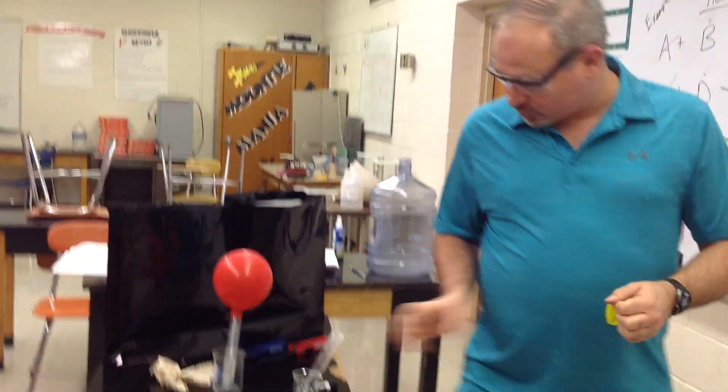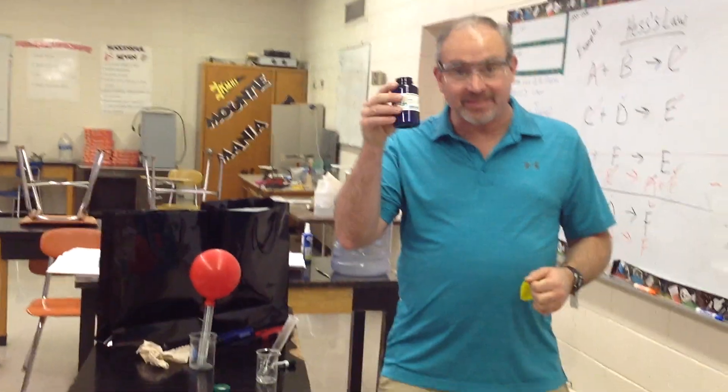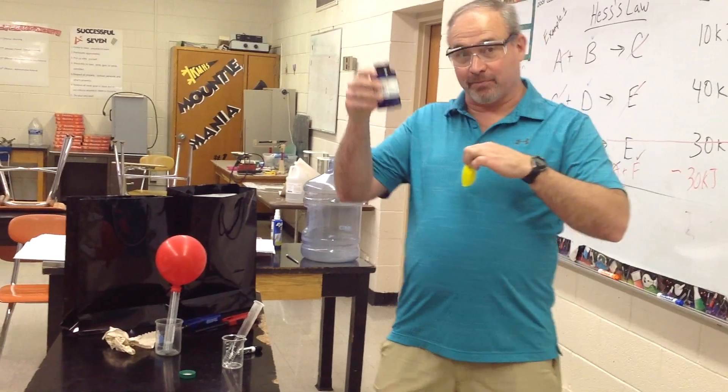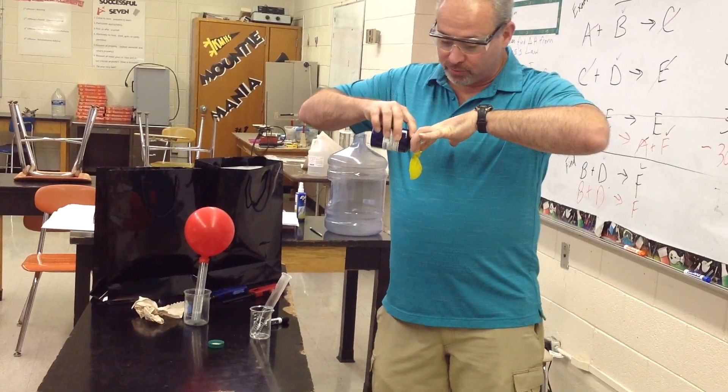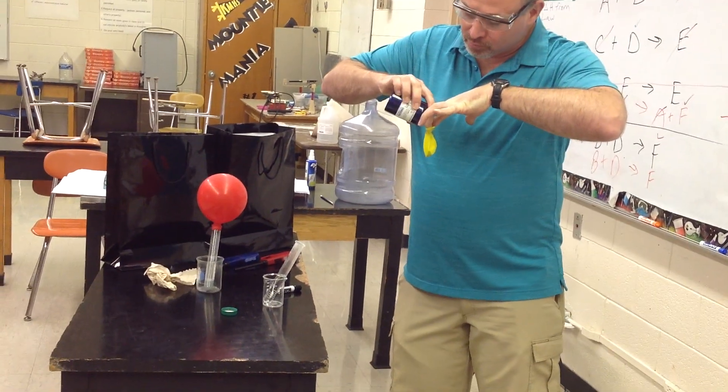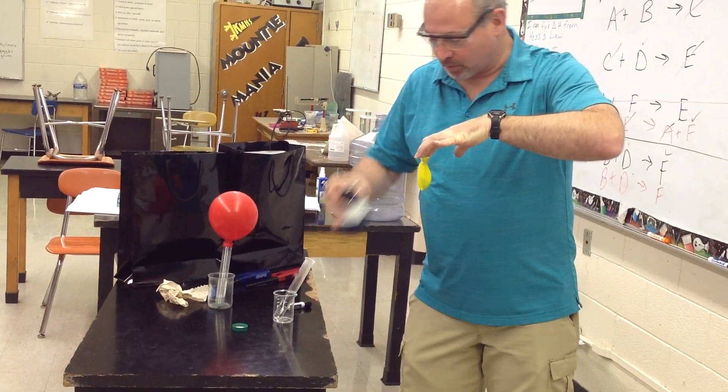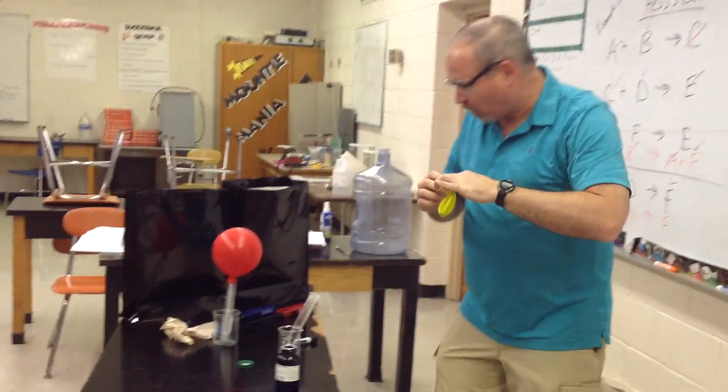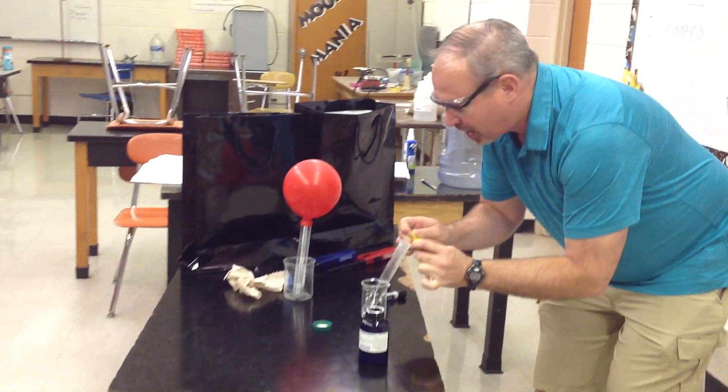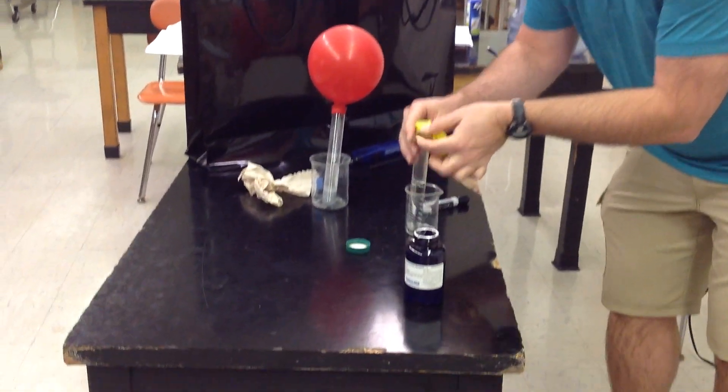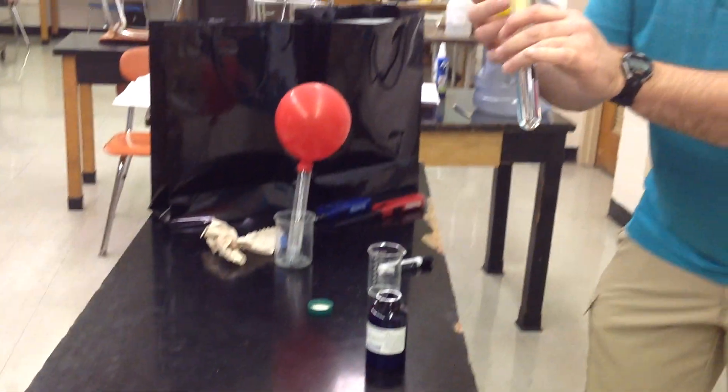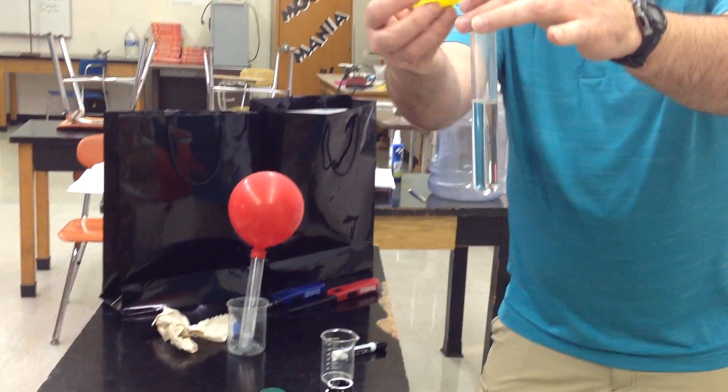To make this real, we're going to put zinc - solid zinc right here - into a balloon. So we've got a good amount of zinc right here at the bottom. We're going to slap this right on top of a test tube containing 6 molar hydrochloric acid.